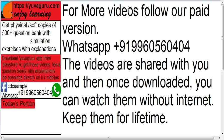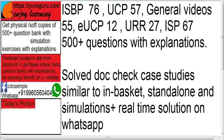You can follow us on Facebook on this link. Now, how many videos are there? ISVP has 76 videos — in fact, daily or monthly new updates are done. UCP has 57 videos. General videos — other than UCP, ISP, ISVP, URR, and EUCP — are 55 videos. EUCP has 12 videos. URR has 27 videos. ISP has 67 videos.